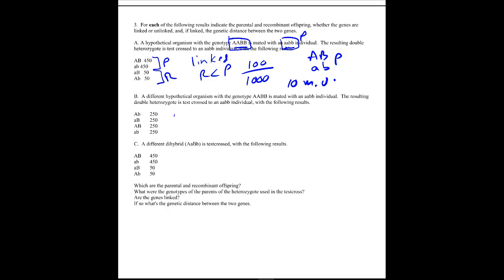In example B, these genes are unlinked. Even though they're unlinked, we still know what the parents are, because these guys started out in a specific configuration - these are the parents just because of the way they were written down, since we know we're starting with those in the parental generation.